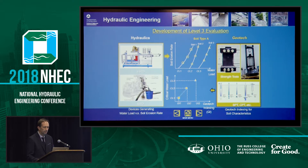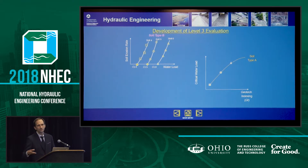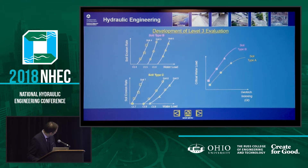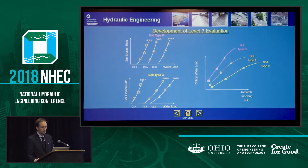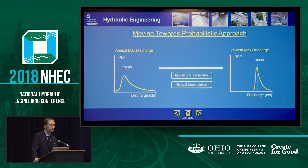In a perfect world, maybe in 10 to 15 years, we won't need erosion tests anymore — you could use a geotechnical index like CPT or geotechnical properties to derive critical water loads. You can develop curves for different soil types. For example, soil type B is more resistant than soil type C, so you need a higher critical water load — more power — to erode that material.